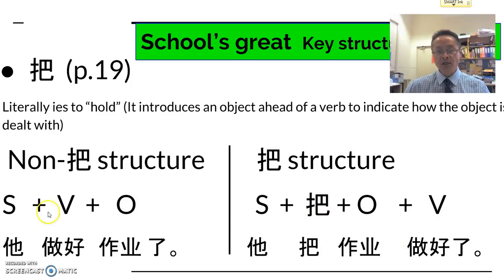So it's different to the non-把 structure. So it's subject, 把, object, verb in the 把 sentence. 他把作业做好了.